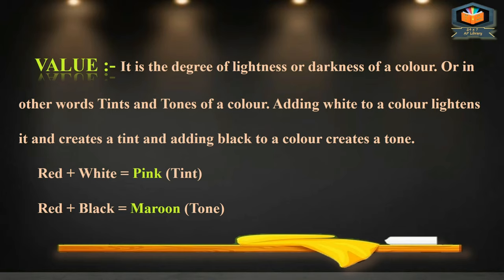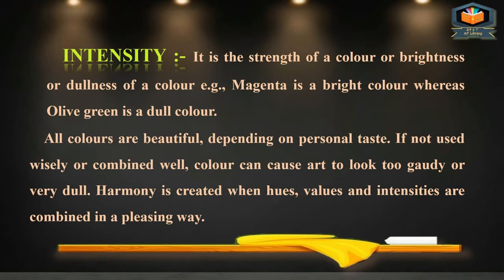Value: if you add white to any color it becomes lighter, creating a tint (e.g., red becomes pink). If you add black to any color it becomes darker, creating a tone. Intensity is the strength, brightness, or dullness of a color. For example, magenta is a bright color whereas olive green is a dull color.